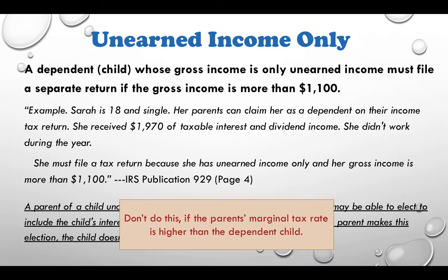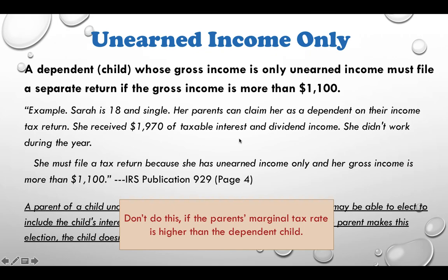In most cases you don't want to do this, because the parent's marginal tax rate is higher than the dependent child's. Most of the time the parent's marginal tax rate is higher than the child's, so you don't want to add the child's taxable unearned income to your tax return. You should file a separate tax return for your child to report the unearned income — those investment income — because you will pay less tax on it.